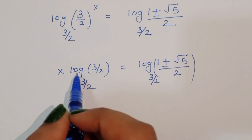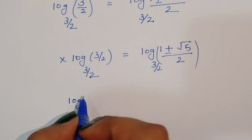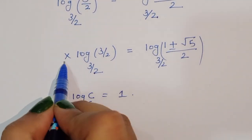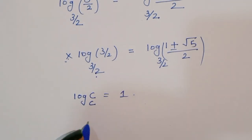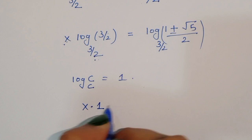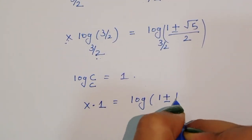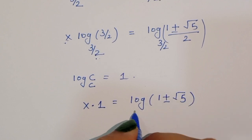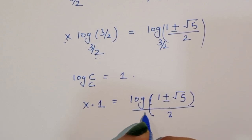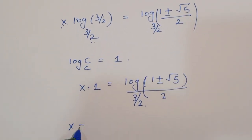We know the formula log of c to the base c is equal to 1. So using that formula, x times 1 is equal to log of (1 + √5)/2 to the base 3/2. Therefore x equals log base (3/2) of (1+√5)/2.